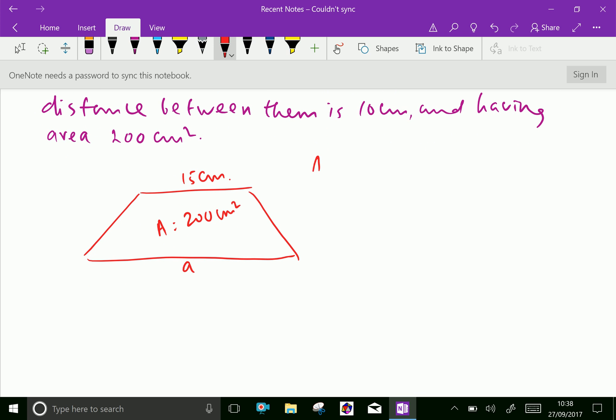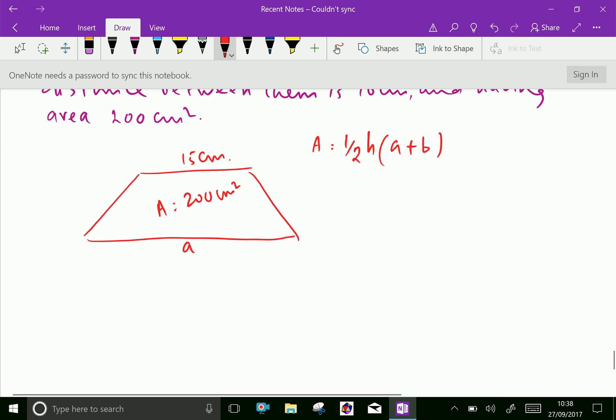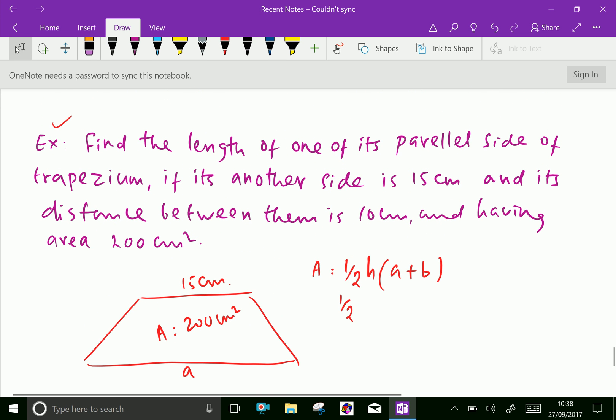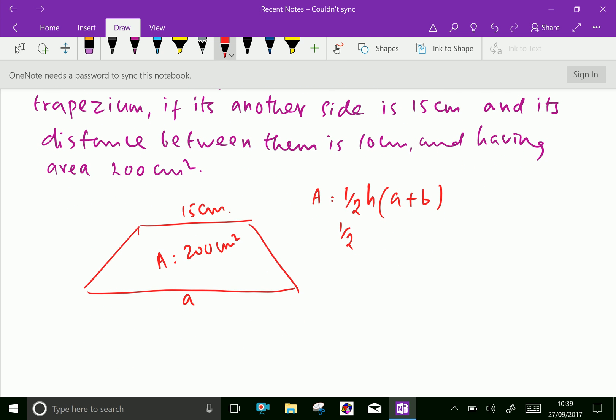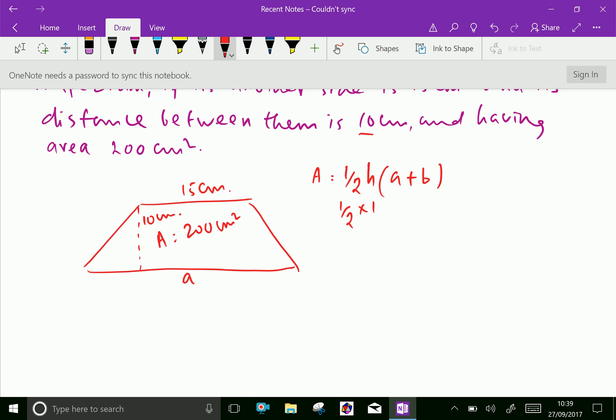Now, area of trapezium, we know that half into H into A plus B. We have the H. The H is given as 10 cm. Now, half into 10 into A plus 15, which equals 200 centimeter squared.